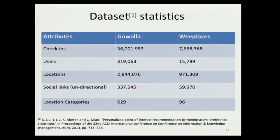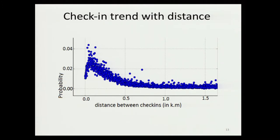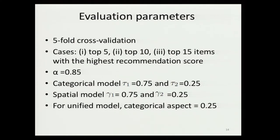We use the Goala and WePlaces datasets, which have a good number of check-ins and relevant information required for our model. Analysis shows that as the distance of a location increases, the probability of checking in decreases, confirming that users prefer nearby locations. We use five-fold cross-validation with top 5, 10, and 15 recommendation scores, and a damping factor of 0.85. For the categorical model, the first term is weighted 0.75 and the second 0.25; similarly for the spatial model. For the unified model, the categorical aspect has a weight of 0.25.